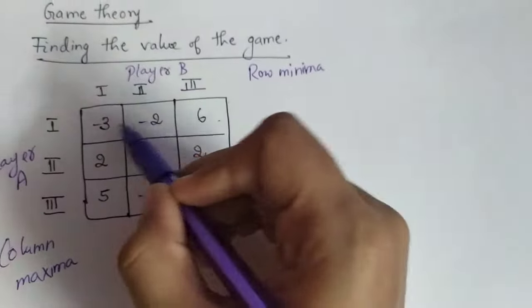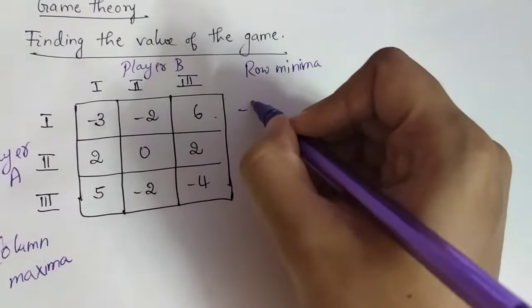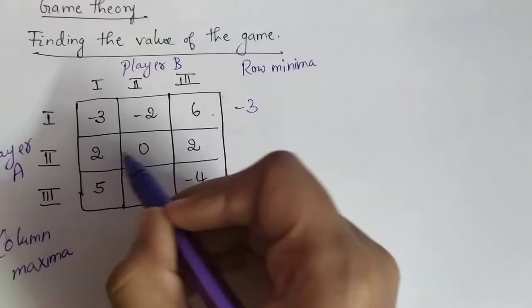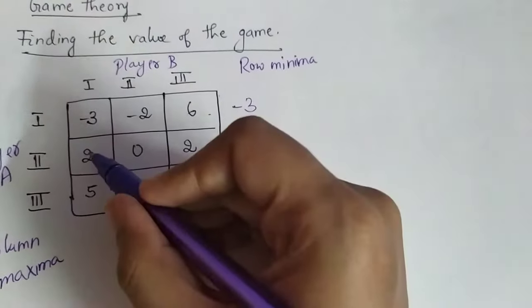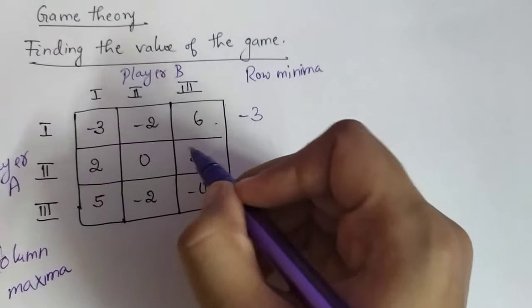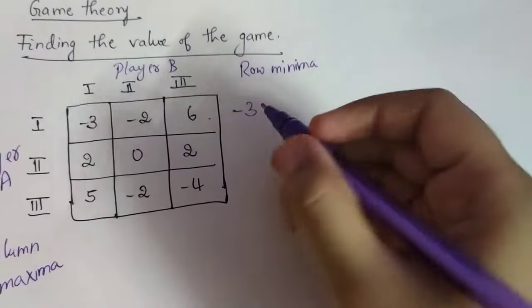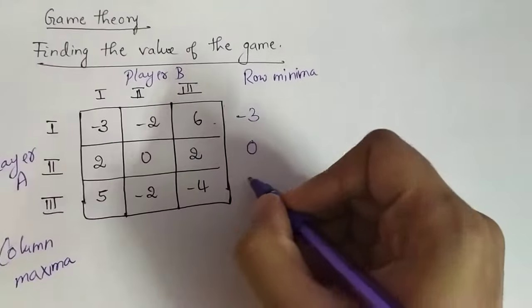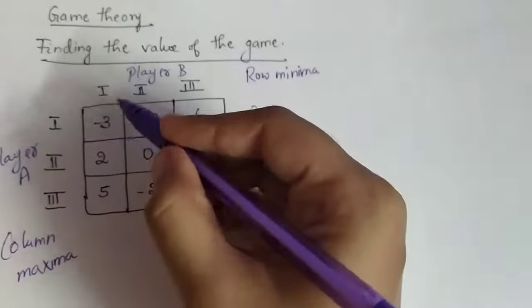Row minima: in these three values which is the least value? It is minus three, you write down that. In the next row, which is the minimum value? It is zero. In two, zero, and two, which is the least one? It is zero, you write down that. And in this the least value is minus four.